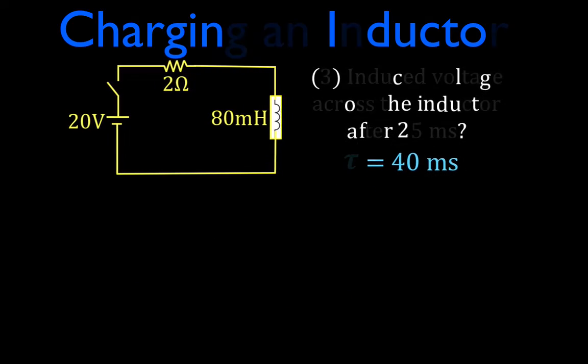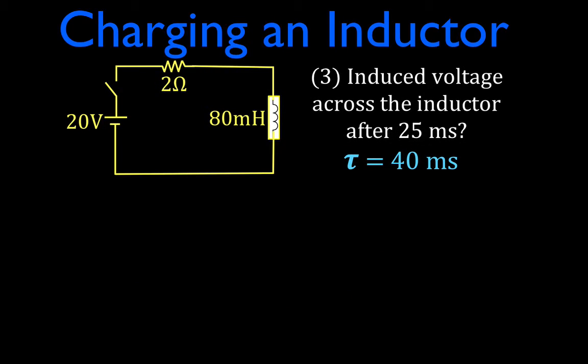Number three is now we want to know what will be the induced voltage across the inductor after 25 milliseconds. You should notice that 25 milliseconds is less than one time constant. One time constant is 40 milliseconds. So that should help us figure out whether we've got kind of the right answer. This is the equation we use. The voltage with respect to time is equal to the voltage of the battery because the initial voltage across the inductor is the voltage of the battery, but then it's going to be reduced by multiplying E raised to the power of minus T times R over L.